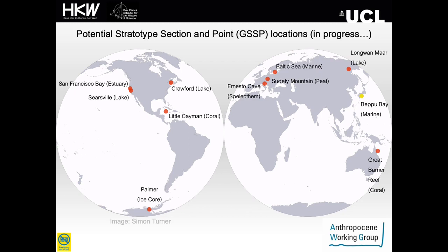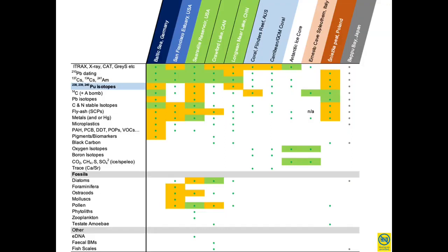Unfortunately, there are no current candidate sections from South America and Africa. Beppu Bay in Japan has a yellow dot here as their inclusion with the collaborative project has just begun. Our coral site has now migrated to the Gulf of Mexico due to COVID travel restrictions on fieldwork this last year. The dots represent analyses proposed to be measured, with orange cells representing processing in progress and green cells representing completed analyses. Not all analyses are being applied to all cores due to the variety of sediment matrices being unsuitable for some markers.